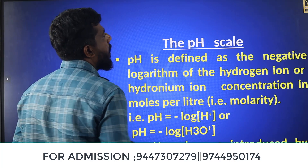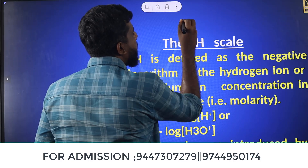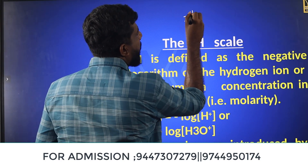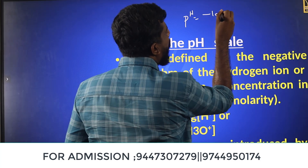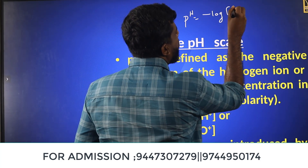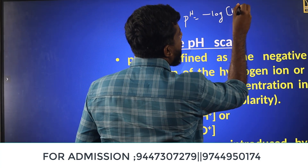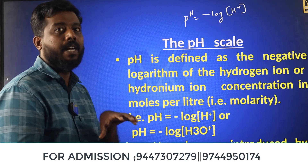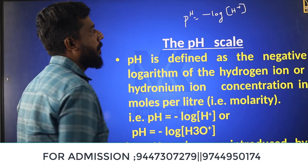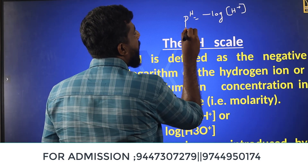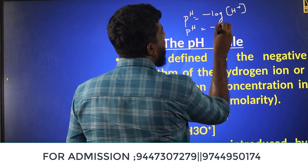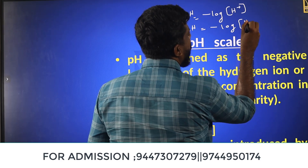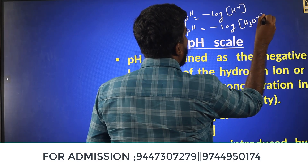In the definition of pH: pH is defined as the negative log of H⁺ ion. This square bracket represents the concentration of H⁺ ion. pH is defined as the negative log of concentration of H⁺ ion.